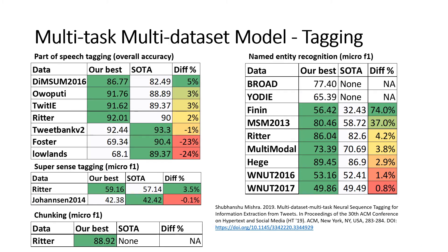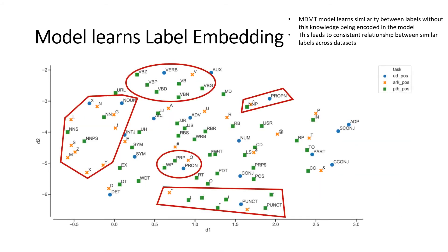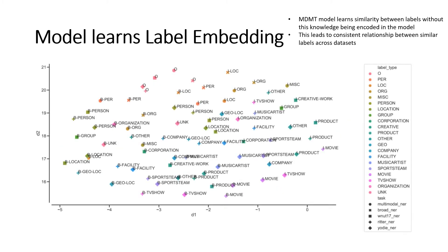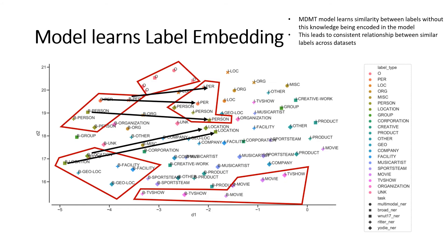For most of the tagging tasks, the model achieves close to state-of-the-art results. Additionally, the model also learns to cluster semantically similar labels from different datasets for a given task. This also extends to span detection tasks where the labels have a span position identifier. The label embeddings capture the direction going from the beginning of a label span to inside of the label span.